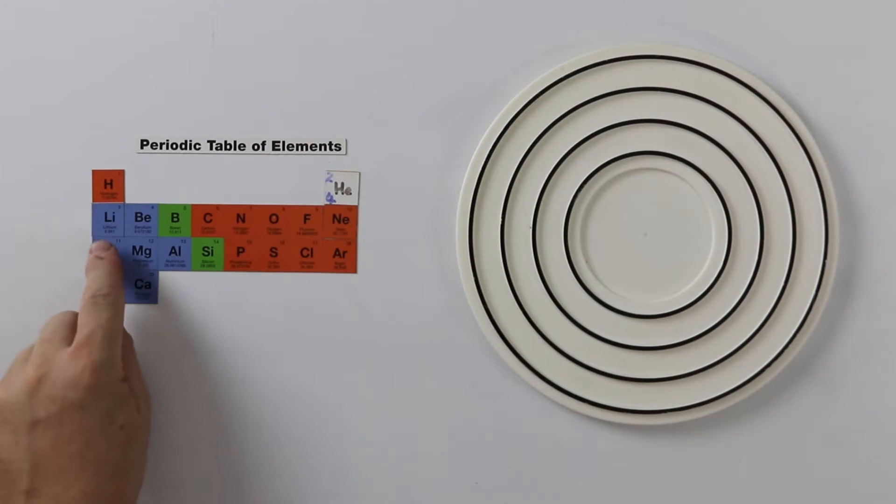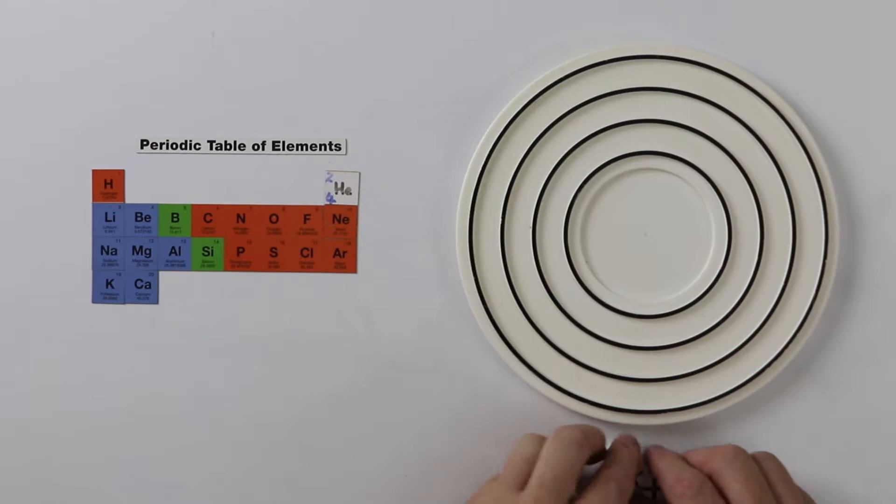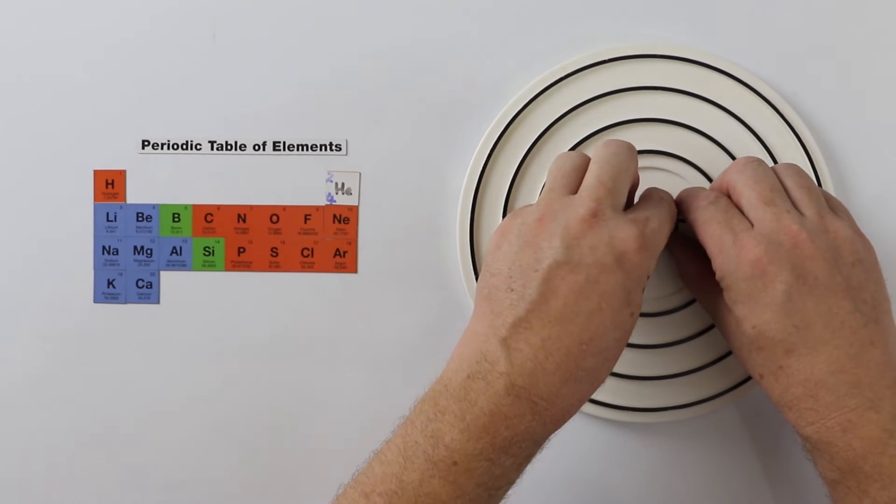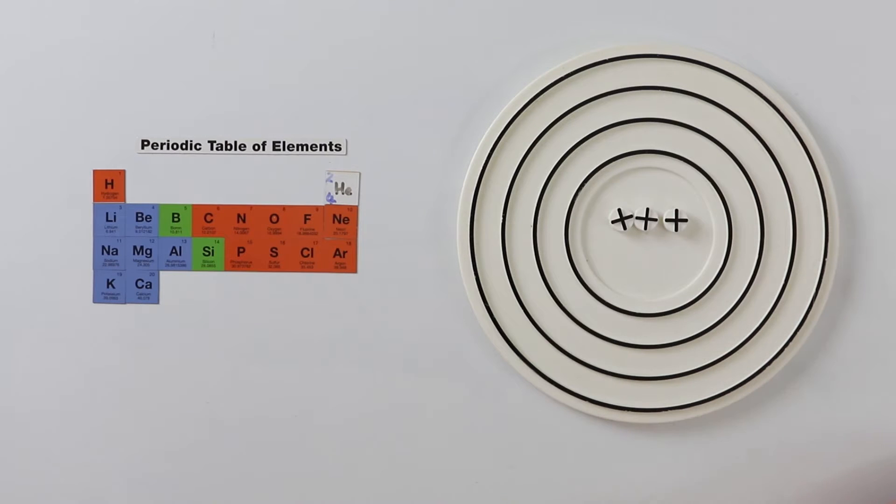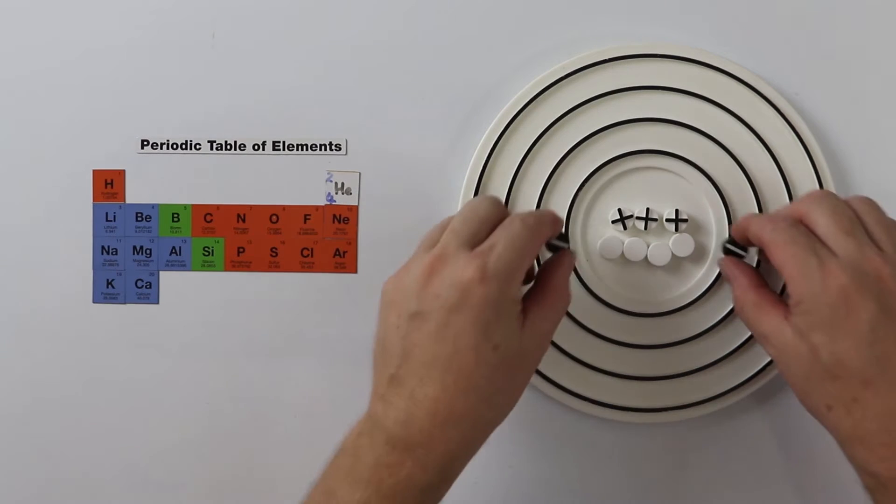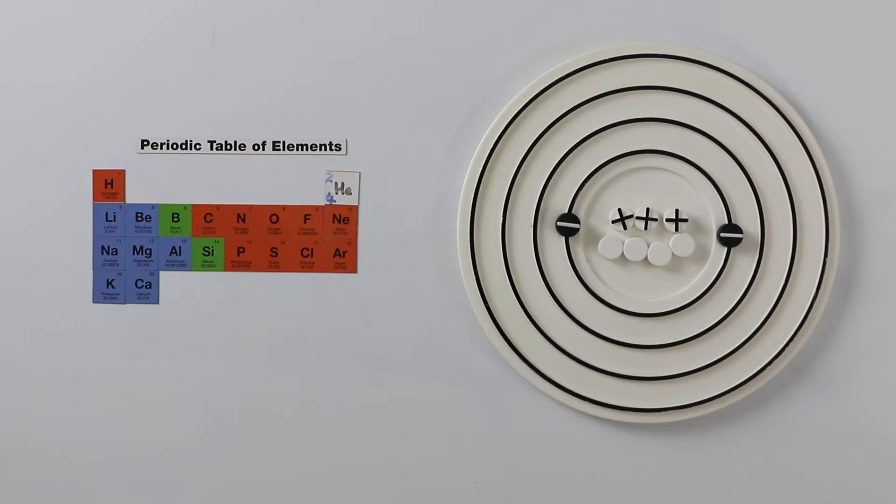The next atom is lithium. Lithium has three protons and it has four neutrons. Let's put these into the nucleus. And then we'll balance it. We put two electrons into the inner layer or shell, and we put one into the next shell. We can arrange these electrons how we like, but it's easier to count them if we arrange them sensibly. Lithium is in the second period.